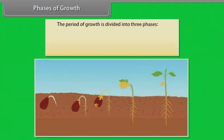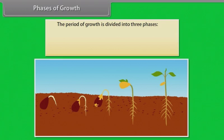Phases of growth. The period of growth is divided into three phases: meristematic, elongation and maturation.